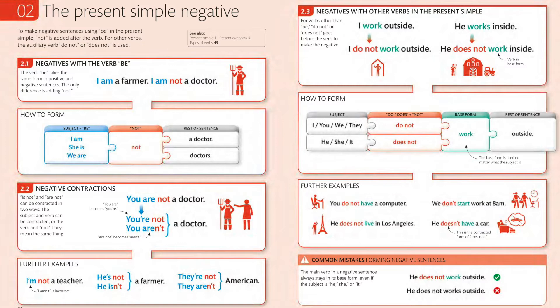There's also the contraction, and the purpose of contraction is to shorten the time you spend saying something. This relates to an important feature of English and any other language — the feature of continuity — meaning you should not stop in the middle of a word, sentence, clause, or phrase. 'Is not' and 'are not' can be contracted in two ways: the subject and verb can be contracted, or the verb and 'not.' They mean the same thing.